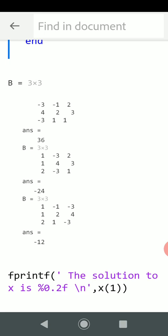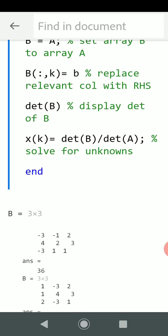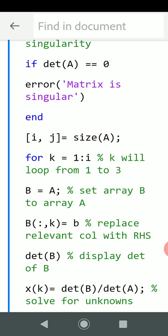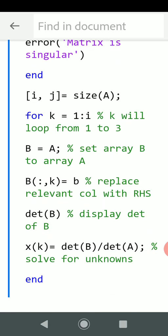Go back to the loop again. Go back to that for loop. And just there before the end we solve for x(k), so that'll be x1. So that's det(B) over det(A).